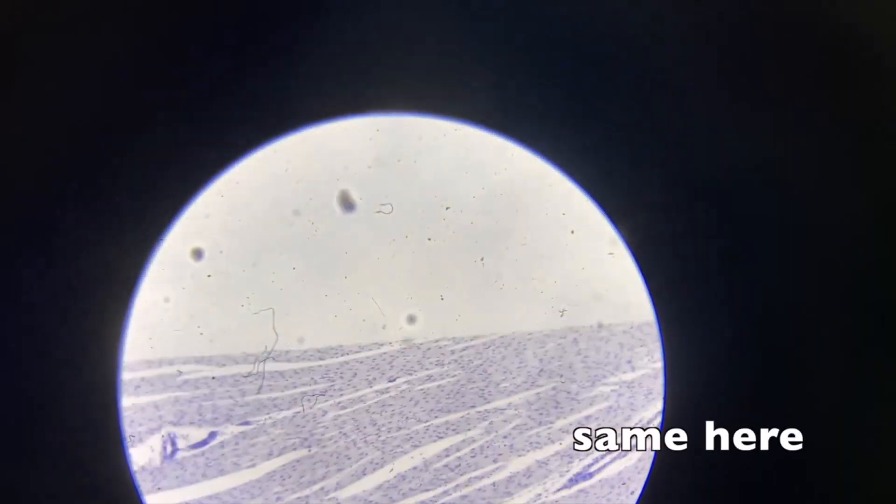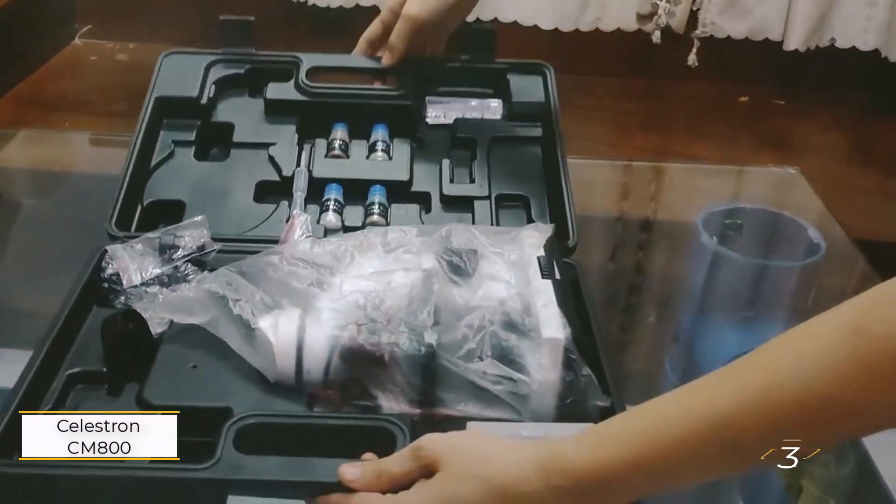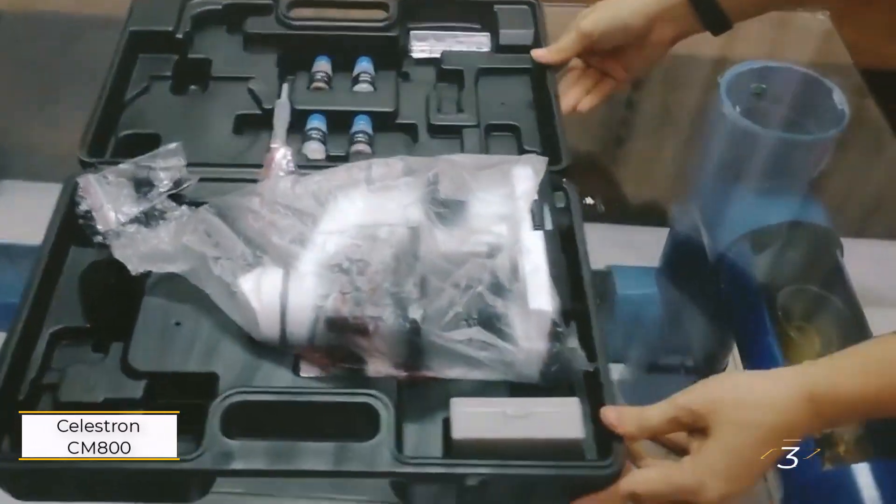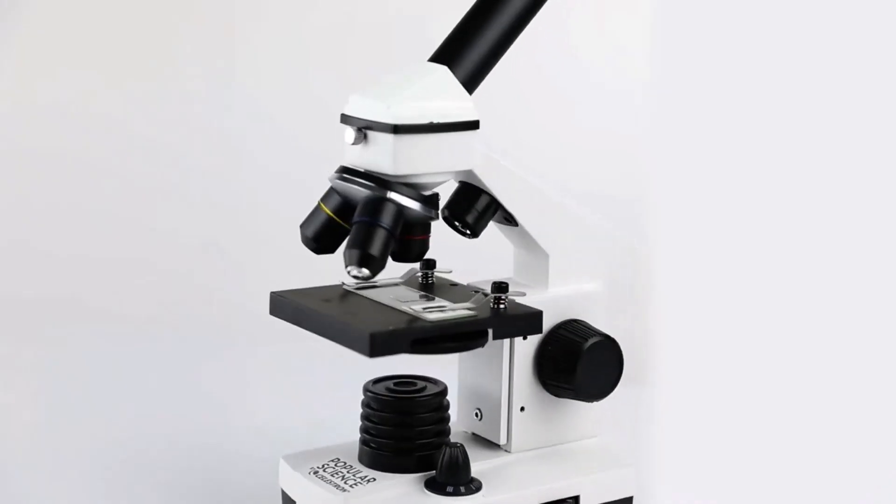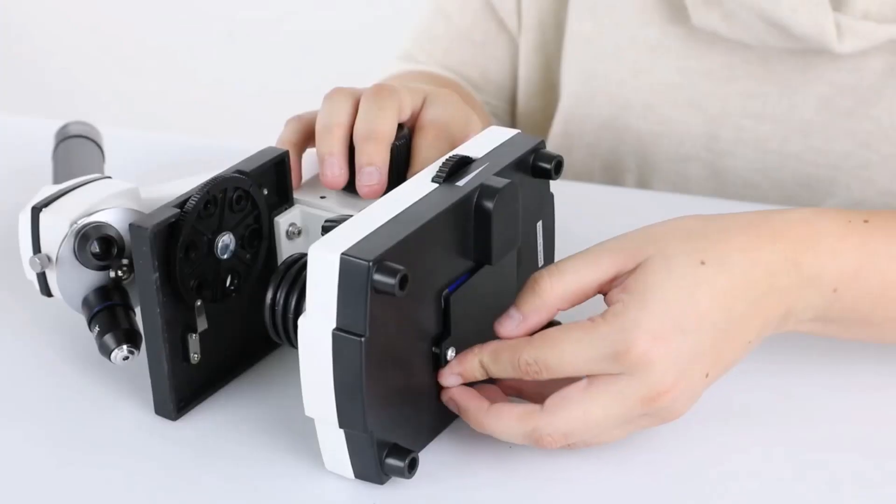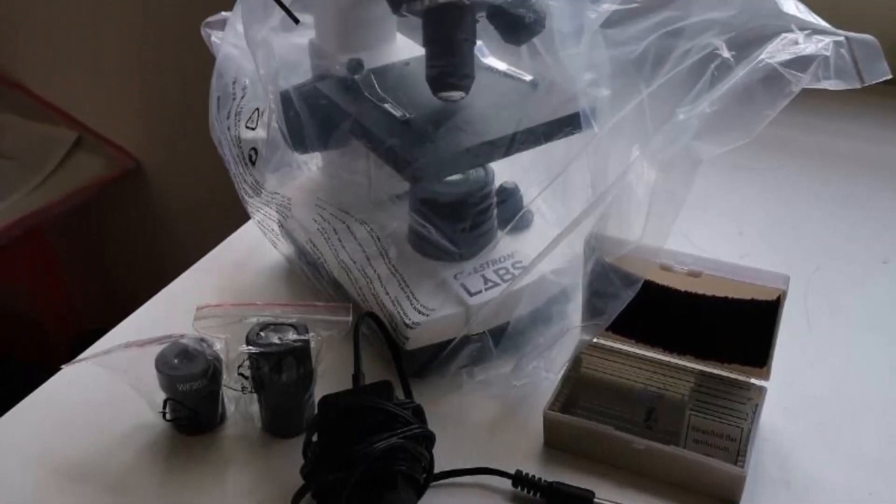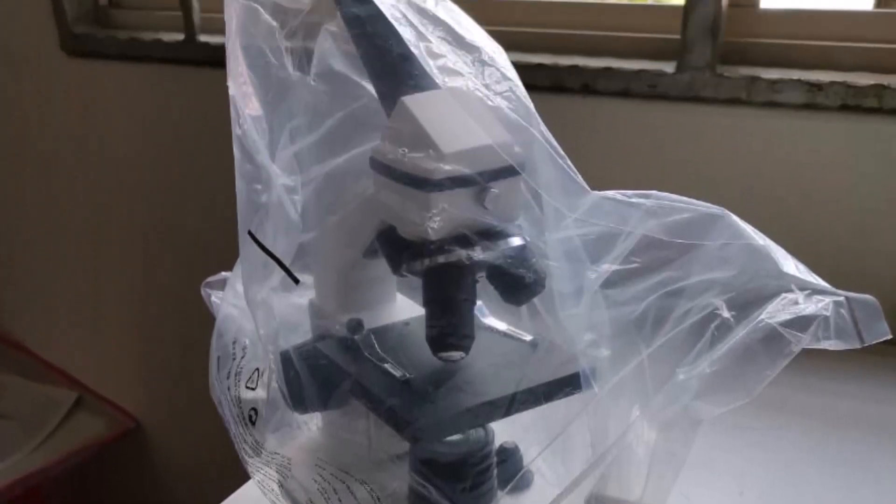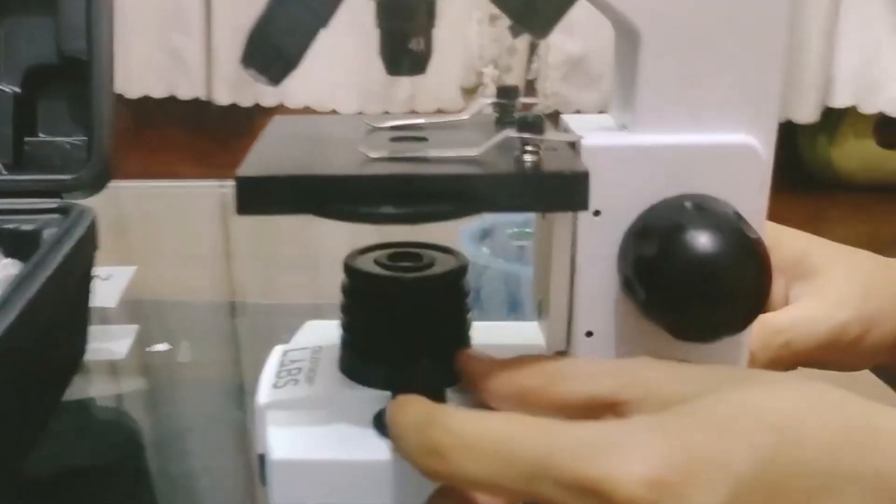Number three: Celestron CM 800 Compound Microscope. The Celestron CM 800 Compound Microscope is an affordable lab-grade option, ideal for college and university students. It comes with 10 prepared slides and features a sturdy all-metal build with two eyepieces and three objective lenses. It offers magnification levels of 40X, 80X, 100X, 200X, 400X, and an impressive 800X.